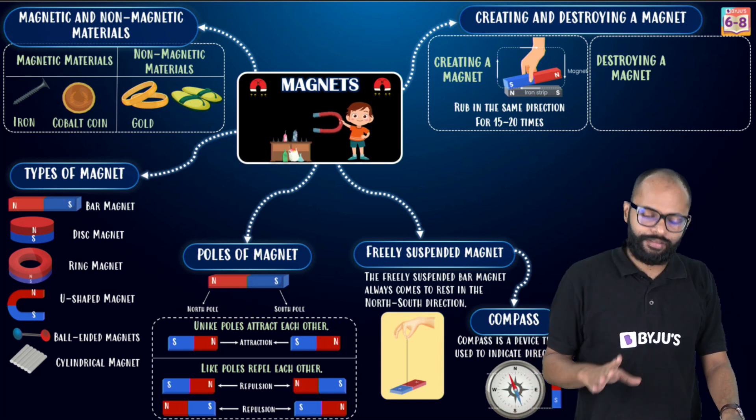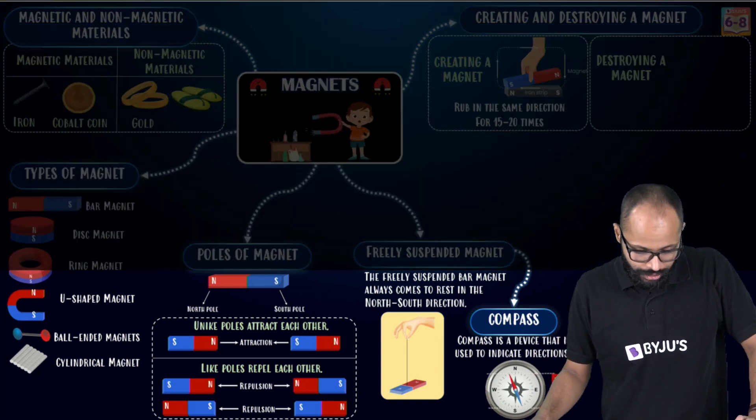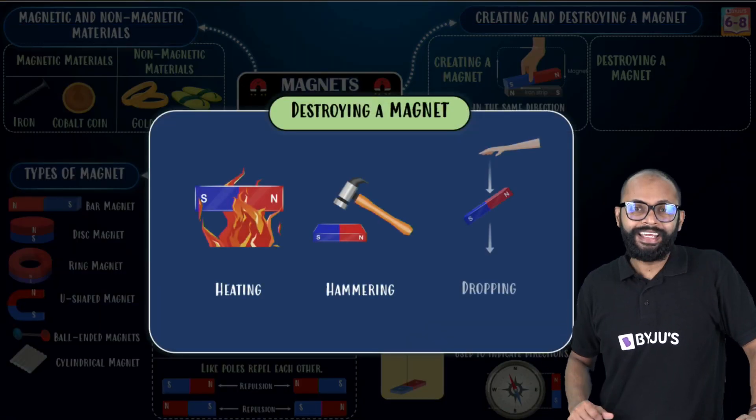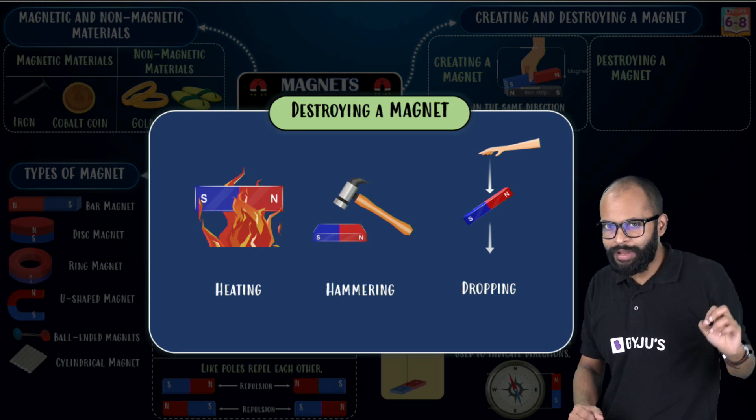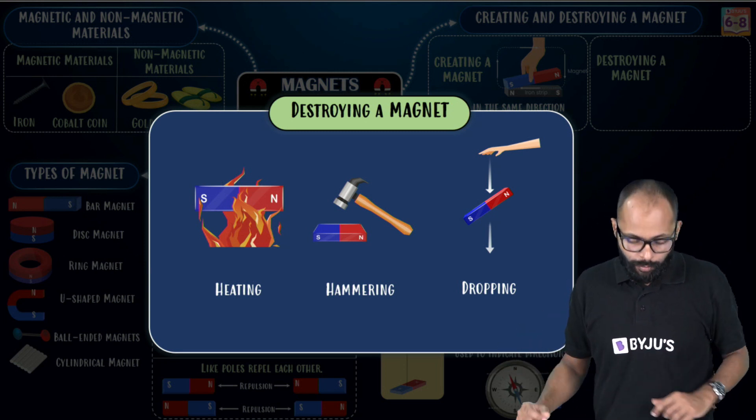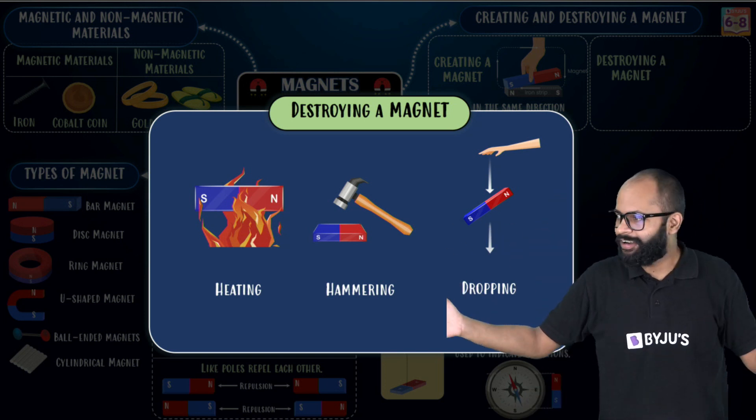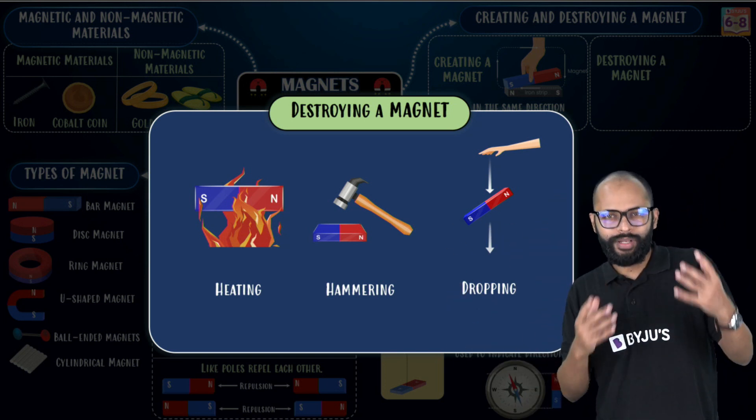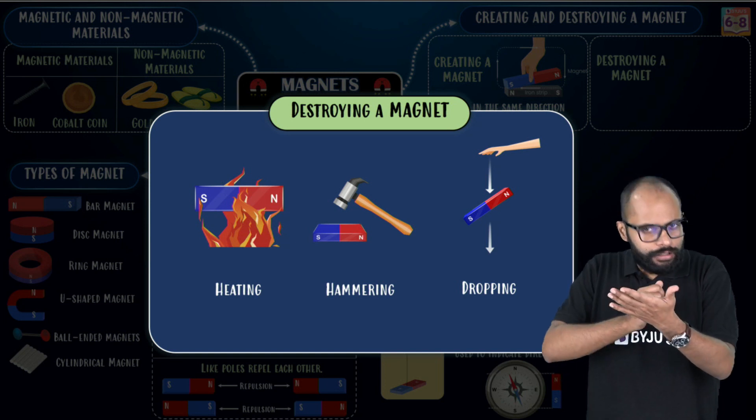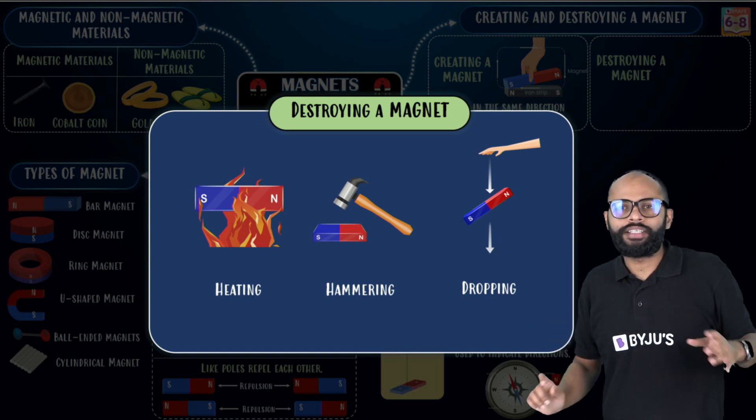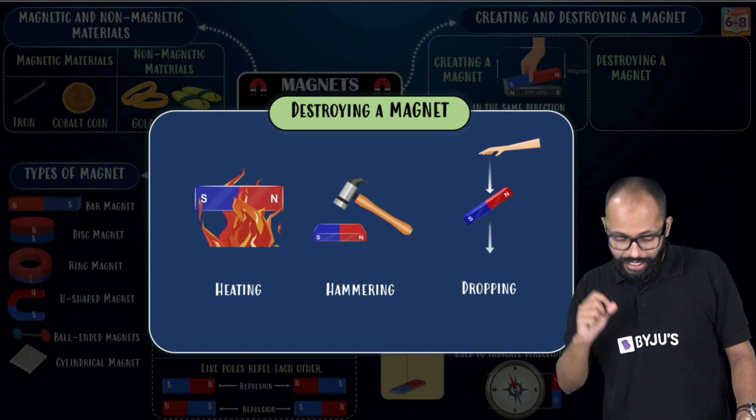But there are ways to kill it. To destroy a magnet. What? You heat the magnet, right? If you heat the magnet, it will lose the magnetic properties. If you hammer it. And when I say hammer it, it doesn't mean that pieces, pieces. No, no, no, no. When I say hammering, it means slightly hammering. That's how it will lose the properties.